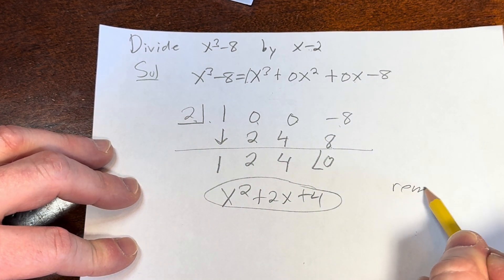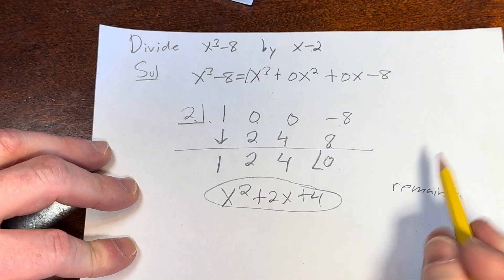And the remainder here is always whatever you see here. The remainder would be 0.